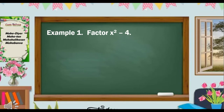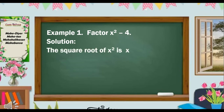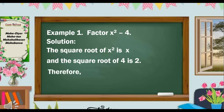For example 1, factor x squared minus 4. Before factoring, make sure that the terms conform with the pattern: are there only two terms? Are the first and last terms perfect squares? Is the operation subtraction? Since the answer is yes to all three questions, we can now start factoring. The square root of x squared is x and the square root of 4 is 2. Therefore, x squared minus 4 is equal to (x plus 2) times (x minus 2).